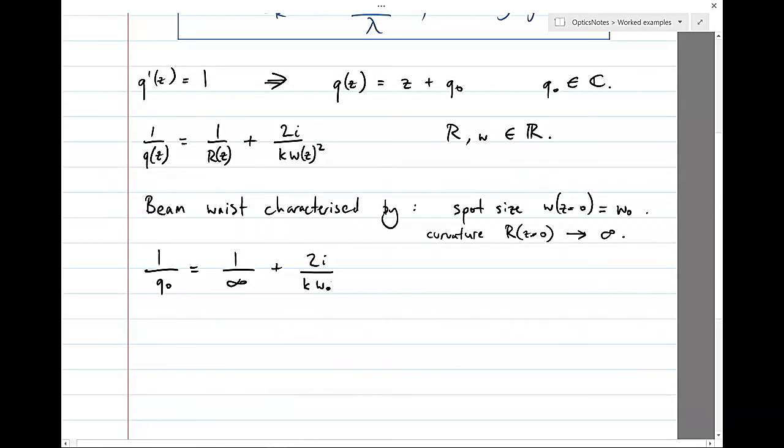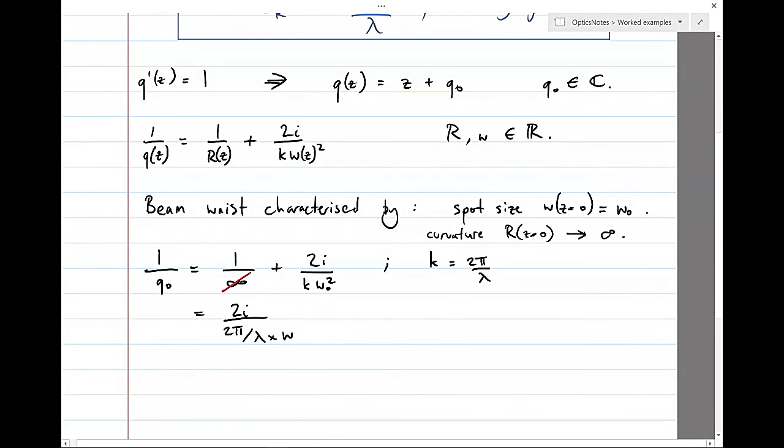1 on Q0, that was our integration constant, is equal to 1 on infinity, revoking my mathematics licence, and substituting in K omega 0 squared. We know what K is. It's the wave number of this monochromatic field. It's 2 pi on lambda.